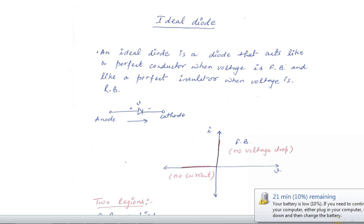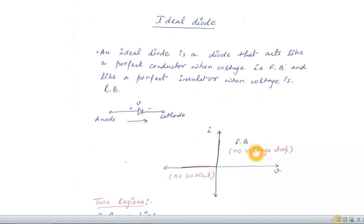You can see in the forward bias there is no voltage drop and in the reverse bias there is no value of current. So why there is no voltage drop? Just because in the forward bias the value of resistance or depletion region is negligible or it can be considered as 0.